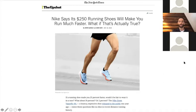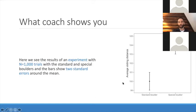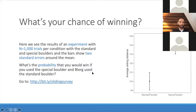You probably want some statistics about the special boulder. Your coach shows you an experiment with a thousand trials of each of the standard and the special boulder. The points represent the average, and the bars represent two standard errors above and below the mean. That's what the standard boulder tends to perform at, and that's what the special boulder tends to perform at. Now here is the question: if you were to use the special boulder, what is the probability that you would win when Blorg used the standard boulder?